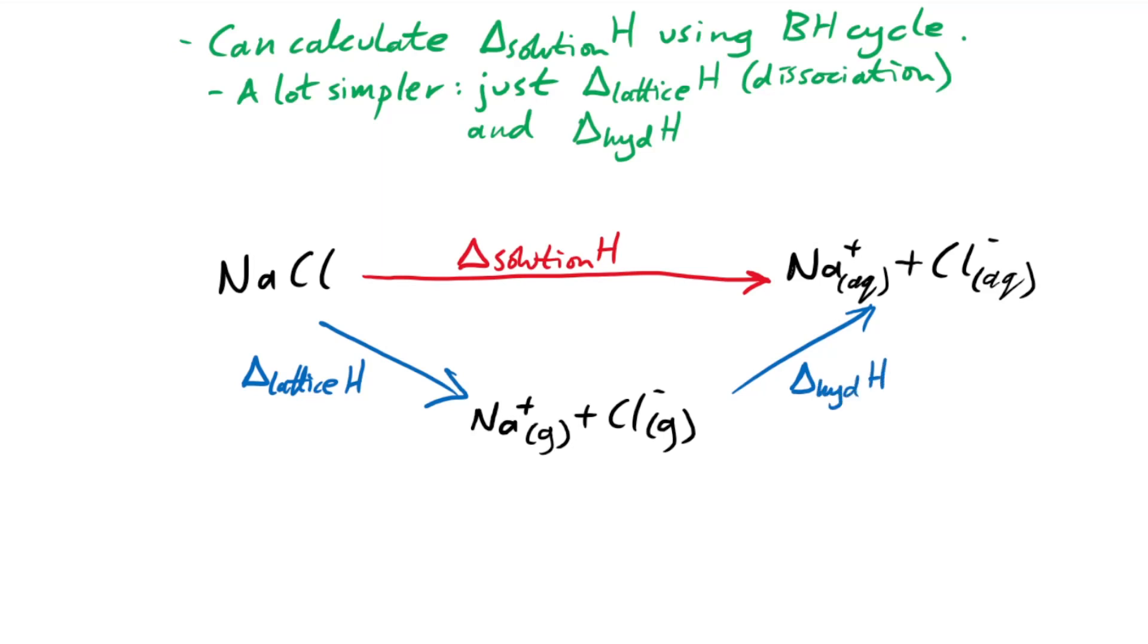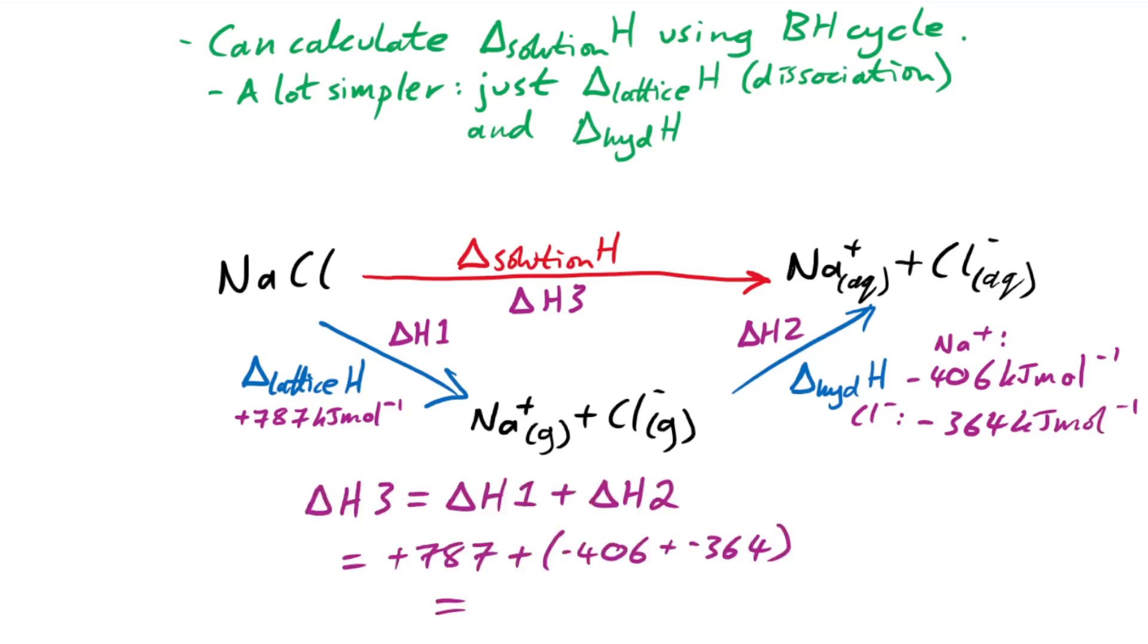And so easy enough, then we can say that the enthalpy change of solution is equal to the sum of these. So we just saw for sodium chloride that the lattice enthalpy change is 787 kilojoules per mole, is going to be positive this time, because of course, we are splitting the ions up. And then let's say that we know we have the enthalpy change values for hydration for both sodium and chlorine, they're both negative. And so adding these up, we end up with a very small value of 17 kilojoules per mole. So this actually is going to be endothermic.